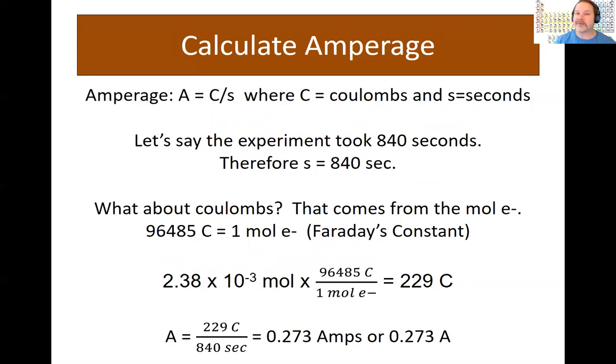Now that gives us half of the calculation that we need for amperage. Amperage is coulomb divided by second. Coulombs is related to the number of moles of electrons that flow. In fact, it's related by Faraday's constant, 96,485 coulombs. So using that relationship that one mole equals coulomb Faraday's constant, we can then actually calculate the number of coulombs passed. Where did I get the moles of electron? Previous calculation.